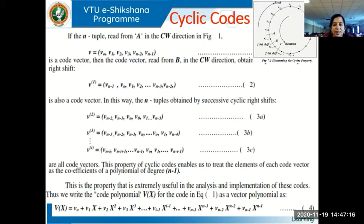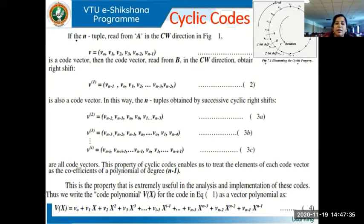Now let's get an insight into the mathematical structure of cyclic codes. We said the mathematical structure is so good that we can use polynomial algebra for analysis. Consider a code vector or n-tuple read from point A in the clockwise direction in figure one. Starting from A in the clockwise direction, we read V0, V1, V2, V3, ... Vn-1. It ends with Vn-1 when we start with V0.